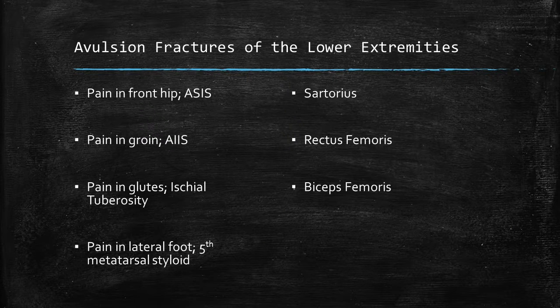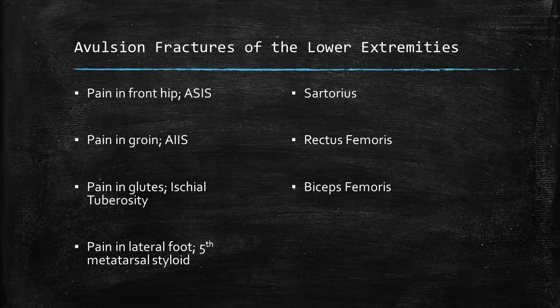There's one more avulsion fracture to discuss, and it's in the foot. This was first described back in 1902 by an orthopedic surgeon named Dr. Jones, who sustained the fracture while dancing. What happened to Dr. Jones was actually a transverse fracture through the metatarsal base — that is a Jones fracture. However, that should be differentiated from an avulsion fracture where forcible plantar flexion and inversion takes a chunk of the metatarsal styloid — that is called a pseudo-Jones fracture. The culprit is the peroneus brevis muscle.